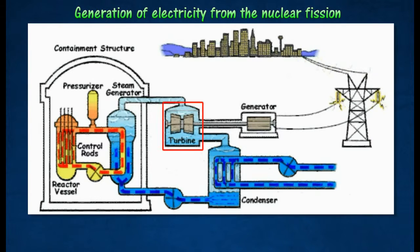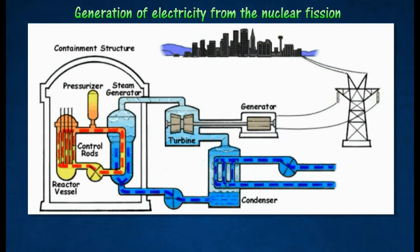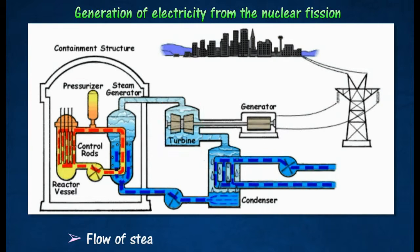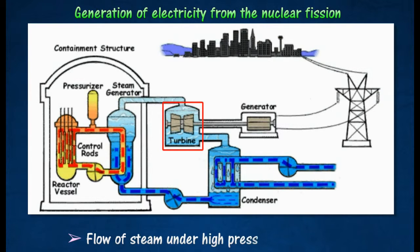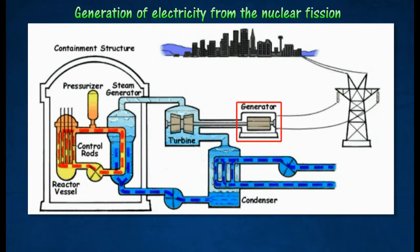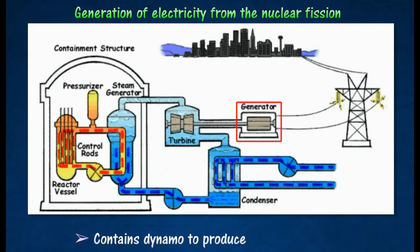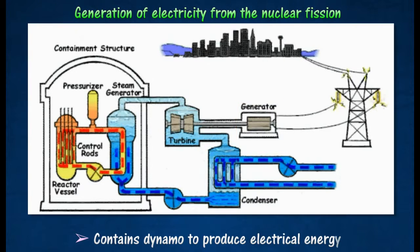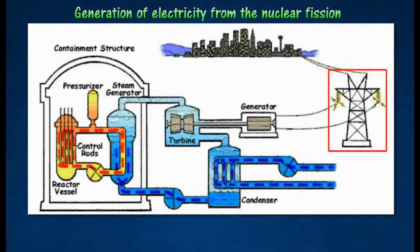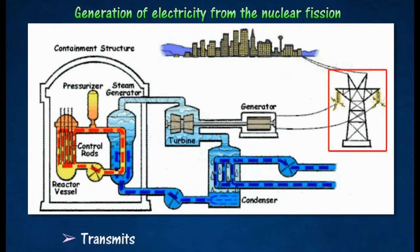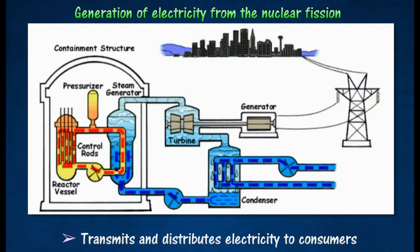The turbine turns the dynamo in the generator. Steam flowing under high pressure spins the turbine. The generator contains a dynamo to produce electrical energy, which is then transmitted and distributed to consumers.